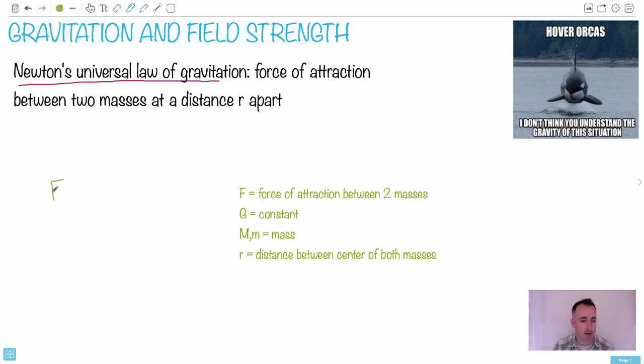F equals GMm over R squared. This is the equation we can use. This is the force of attraction, and we assume that gravity always attracts. Force of attraction is measured in Newtons. G is just a constant, 6.67 times 10 to the minus 11. Mass is measured in kilograms. R is the distance between the center of both masses, measured in meters.